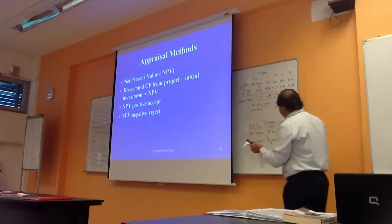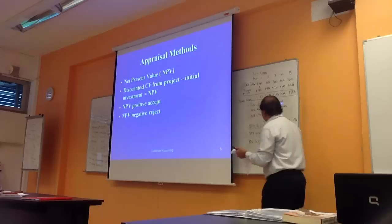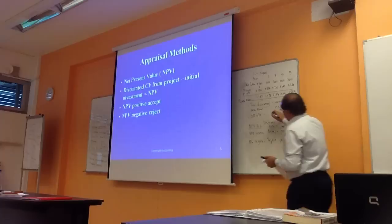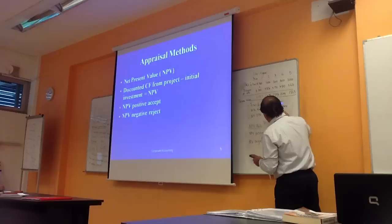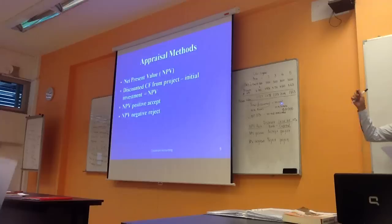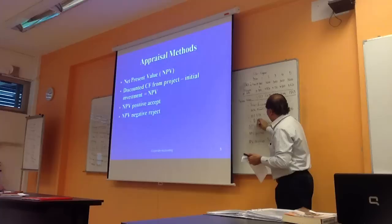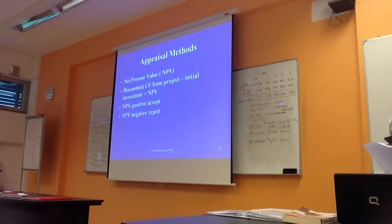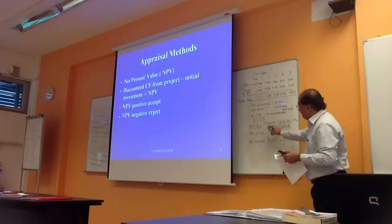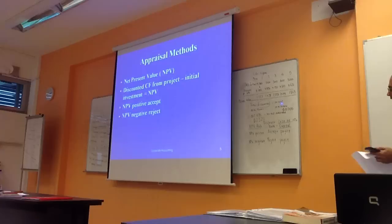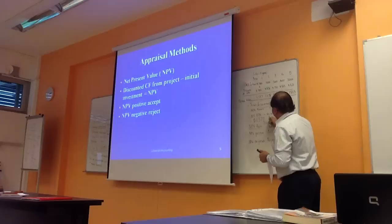Total discounted cash flows = $11,370. Minus the initial investment — assuming the cost of this machine is $10,000. So: $11,370 − $10,000 = NPV of $1,370. Applying the NPV rule: this is a positive number, therefore the company should accept this project.